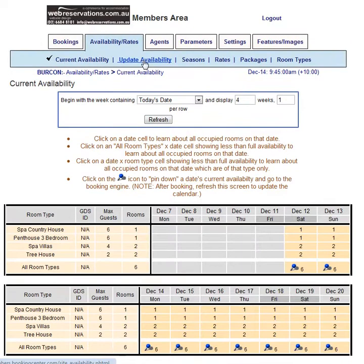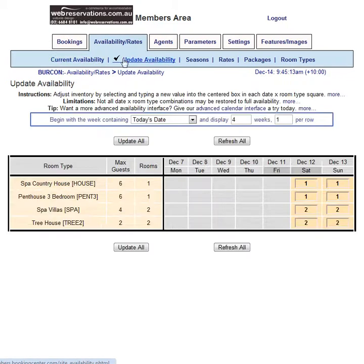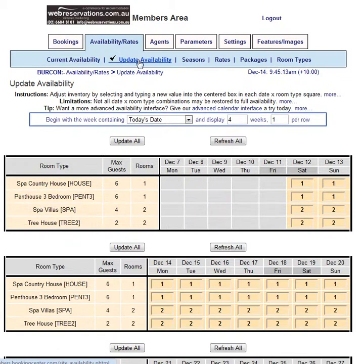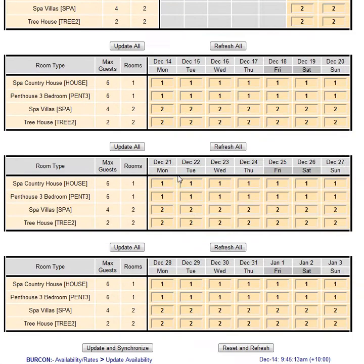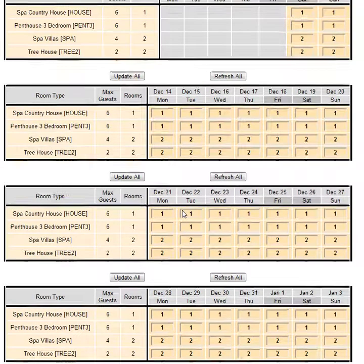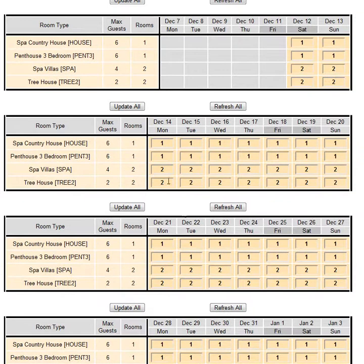But when I want to update availability, I click here where it says Update Availability, and I see four weeks of inventory. So if I want to block out some inventory — either because I don't want to sell that day or because I've taken bookings — I put my mouse over the number in the box and I change it to zero.